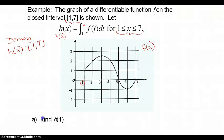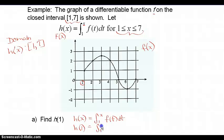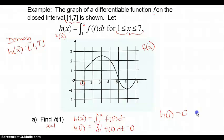They're asking you to find h of 1. h of x is defined to be this integral, so show the AP reader you understand what h of 1 is — it is the area accumulated starting at 1 and stopping at x equal 1. So we're integrating from 1 to 1, which accumulates to zero. If you just write h of 1 equals 0 without showing the integral setup, you won't get process points. You have to prove you know why it's zero — this justifies your answer.